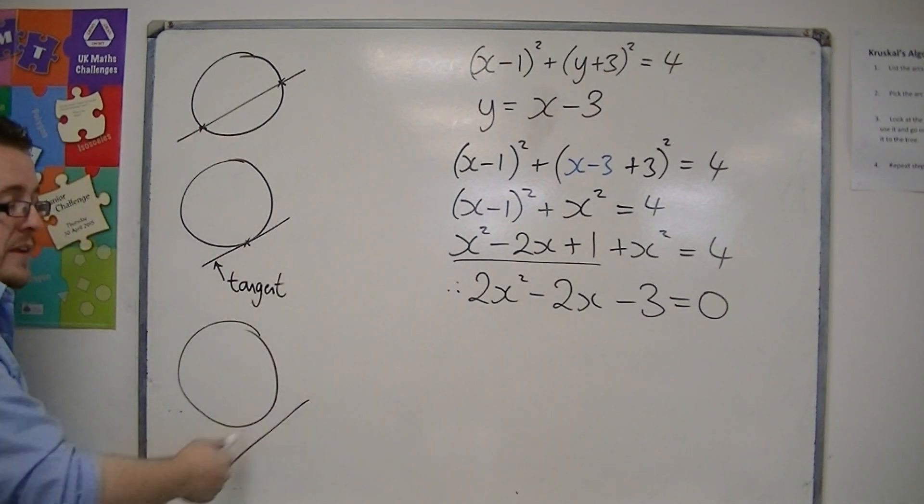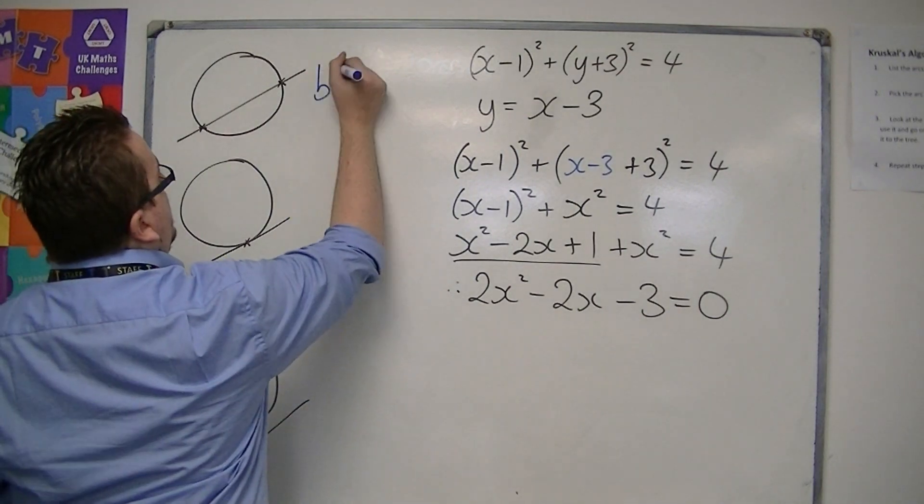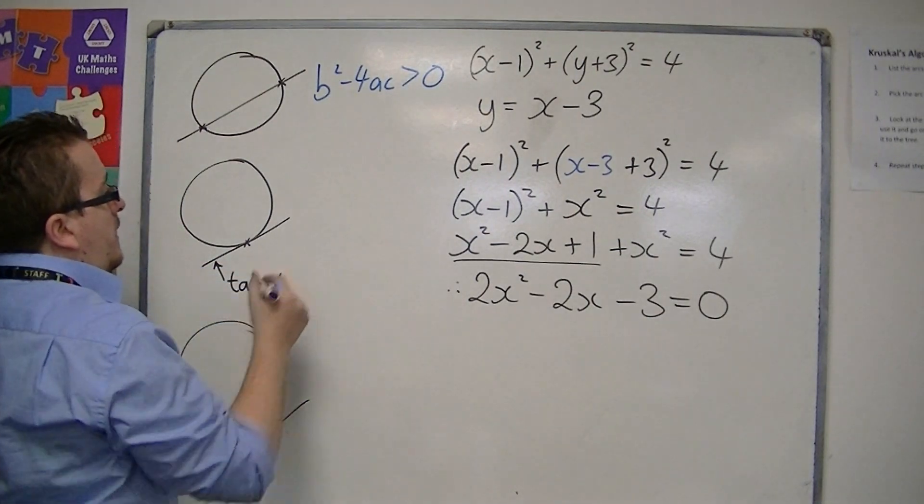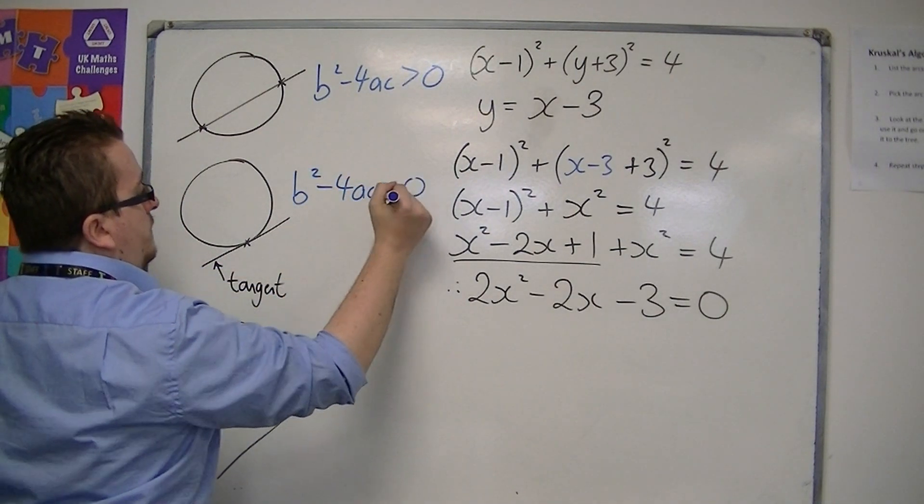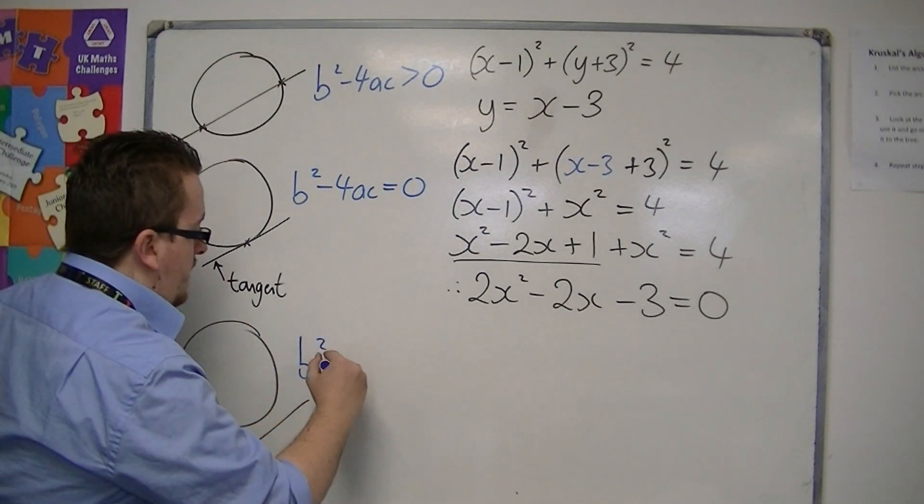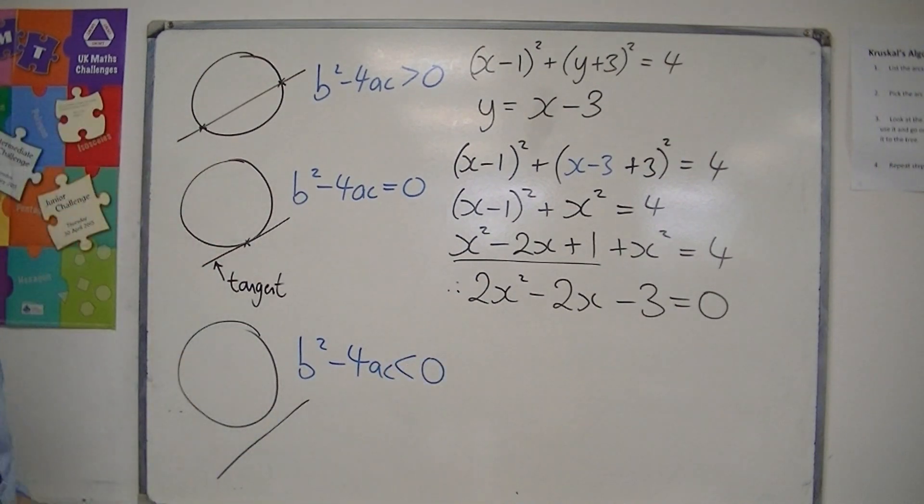or the line misses the circle entirely. So the discriminant, if we've got two distinct points, must be greater than zero. For it to be a tangent, the discriminant must be zero. And if it misses the circle altogether, then we can have no intersection points, and so the discriminant must be less than zero.